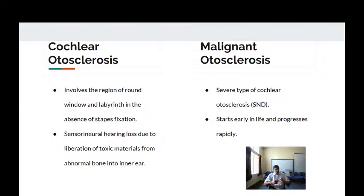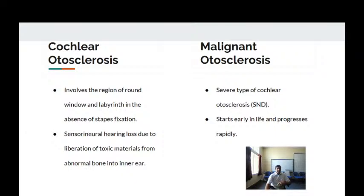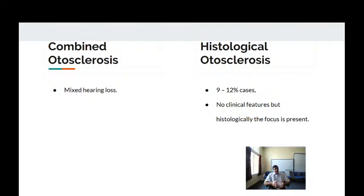In cochlear otosclerosis, it involves the region of the round window and proceeds into the labyrinth through the oval window. There may be absence of stapes fixation, and the sensorineural hearing loss is due to liberation of toxic material from the abnormal bone into the ear fluids. Malignant otosclerosis starts early in life, progresses very rapidly, and produces a combined mixed hearing loss. Combined otosclerosis involves both stapedial and cochlear components.